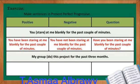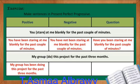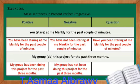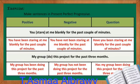The second one: My group do this project for the past 3 months. The verb is do. The correct positive statement is: My group has been doing this project for the past 3 months. The negative statement is: My group has not been doing this project for the past 3 months. And the question is: Has my group been doing this project for the past 3 months?